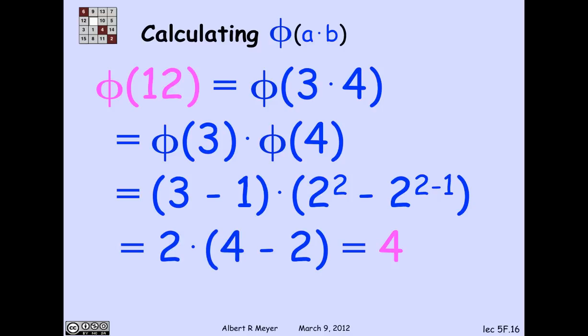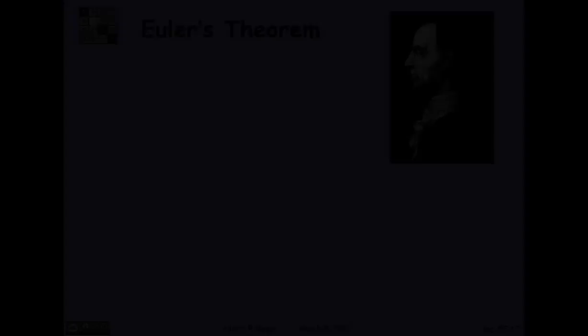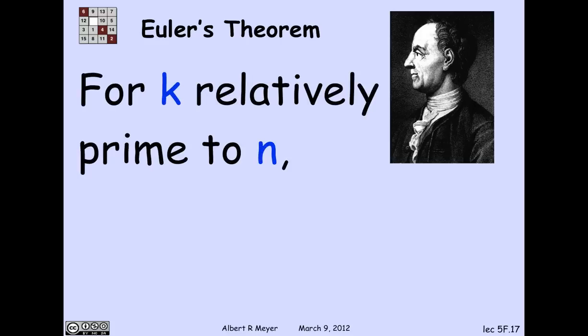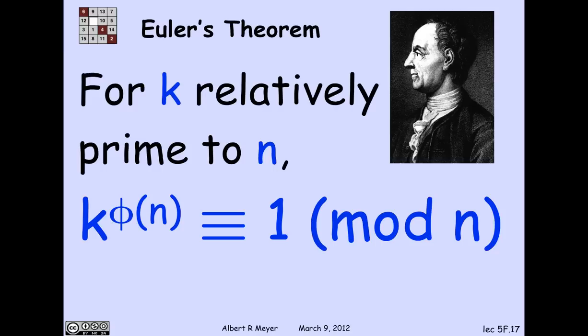And the punchline for why we're examining phi is Euler's theorem, which tells us how powers of numbers in GCD1 of n behave. Namely, that if k is relatively prime to n, then if you raise k to the power phi of n, it's congruent to 1 mod n. And that will lead us in the next section. We will look at the proof of Euler's theorem.